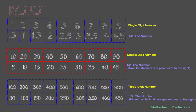Likewise, for a three digit number, all you have to do is move the decimal place two spaces over to the right — one, two. So half of 100 is 50, half of 200 is 100, half of 300 is 150, and so forth.